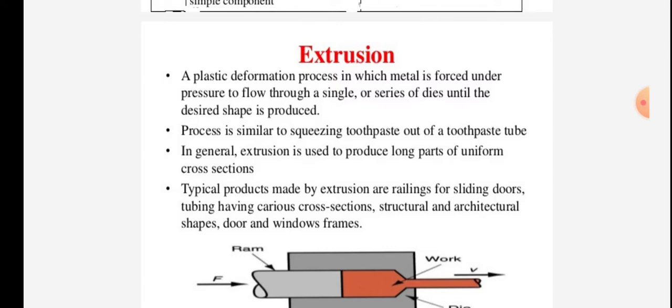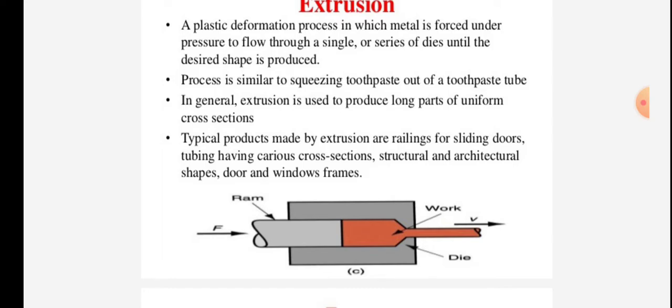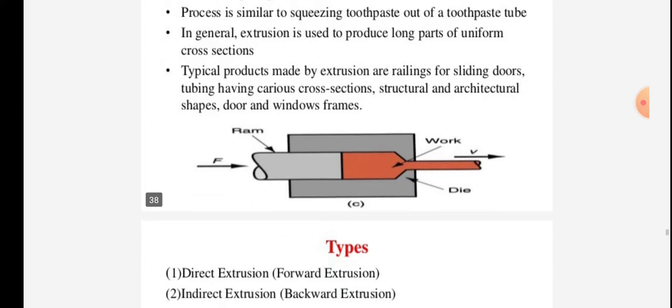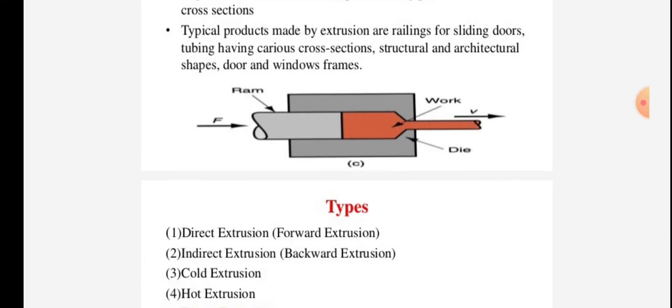The process is similar to squeezing toothpaste out of a toothpaste tube. In general, extrusion is used to produce long parts of uniform cross sections. Typical products made by extrusion are railings for sliding doors, tubing having various cross sections, structural and architectural shapes, doors and window frames.